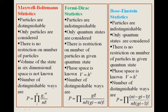In the case of Maxwell-Boltzmann statistics, particles are distinguishable. In the case of Fermi-Dirac statistics, particles are indistinguishable. In the case of Bose-Einstein statistics, particles are also indistinguishable. So in MB statistics we can distinguish between the particles, whereas in the other two cases they are indistinguishable.